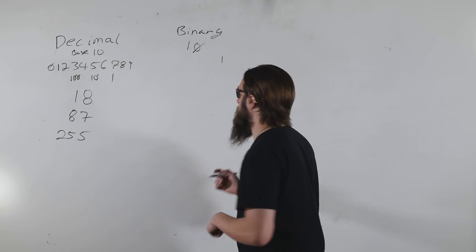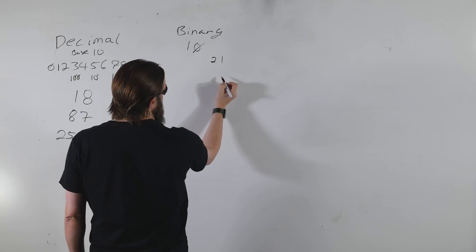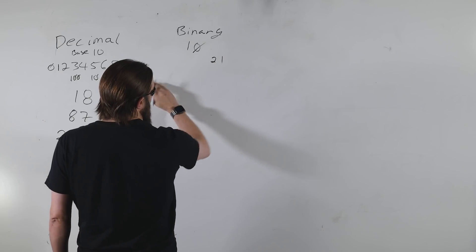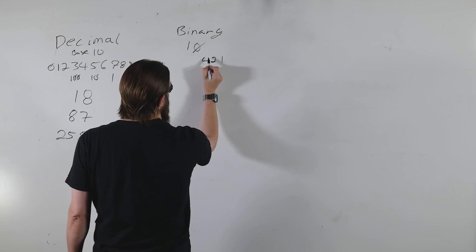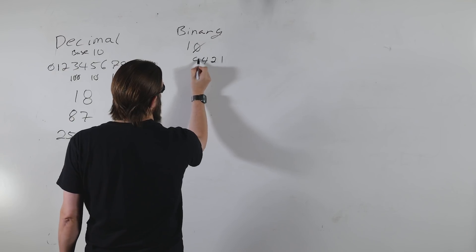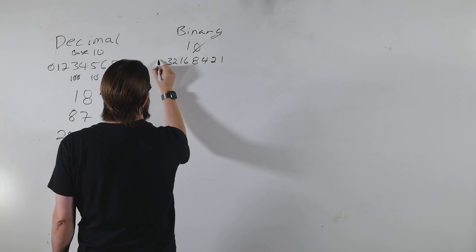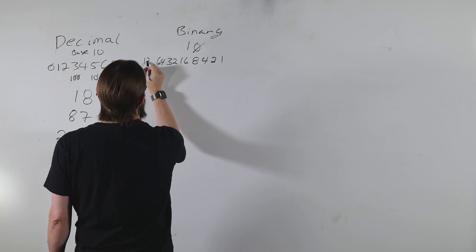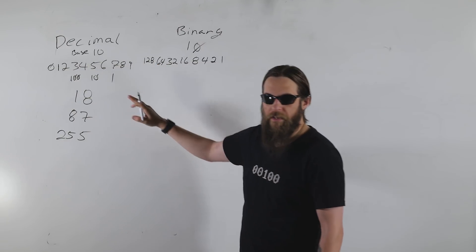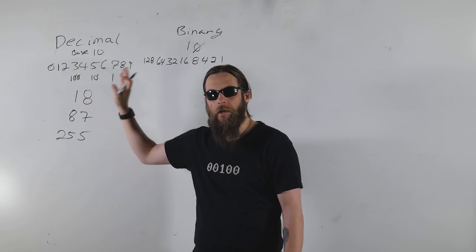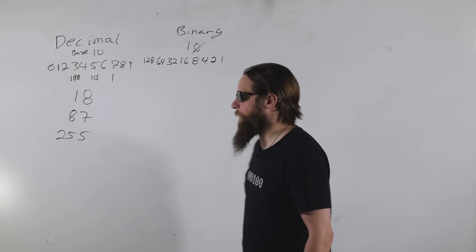The place value of binary starts with the ones column. Then we move on to the twos column, fours, eights, 16, 32, 64, 128, and this keeps going: 256, 512, 1024, 2048, 4096, and so on.